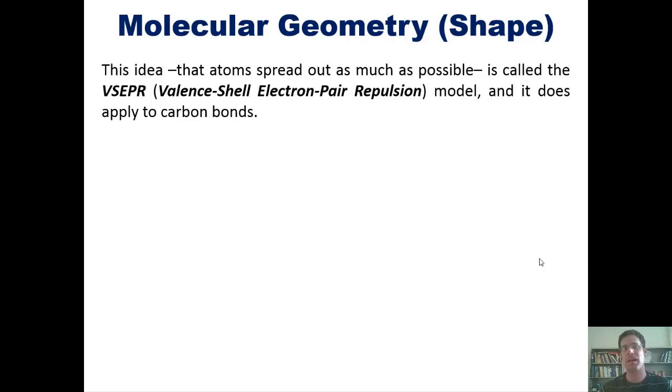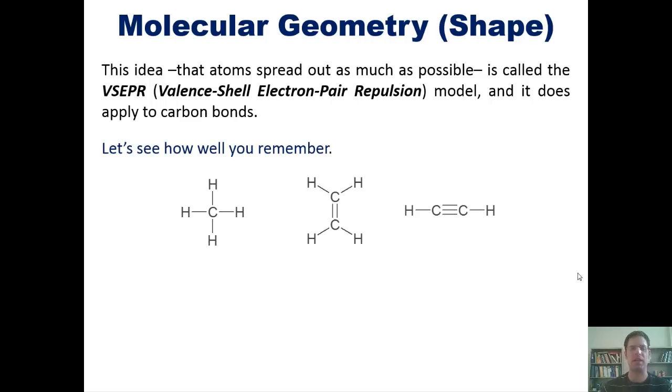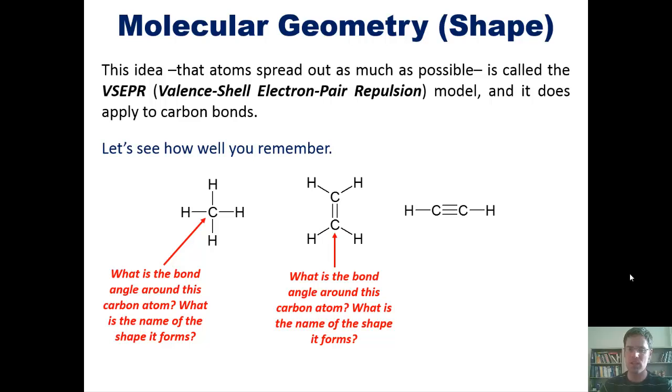All right, let's see how well you remember this by asking you a couple simple questions. For these molecules right here, what is the bond angle around this carbon atom? What is the name of the shape that it forms? I'm not answering this for you, by the way. I want you to make sure you know how to answer this on your own. How about the same question for this carbon atom and this carbon atom? Can you get it? I hope so. If not, you should definitely make sure that you can before you go on.